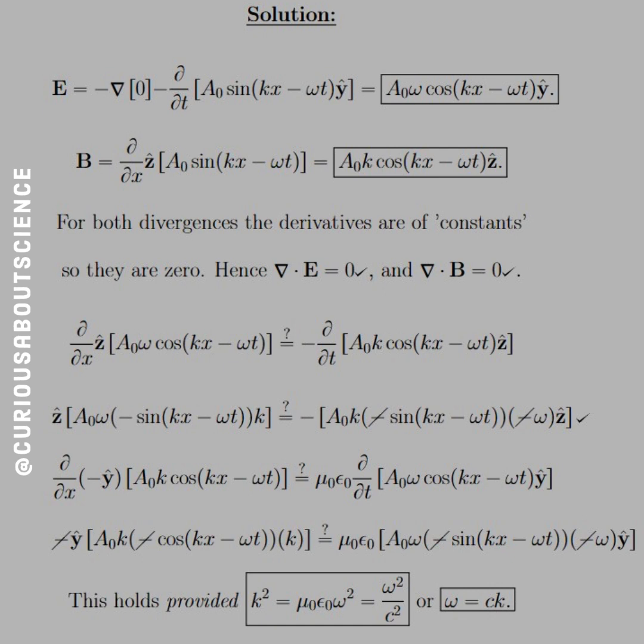E gives us A0 omega cosine kx minus omega t y-hat. B, for the curl, we just need the d by dx component. I think we've done enough curls in this class. And what we see is that we get A0 k cosine kx minus omega t z-hat.